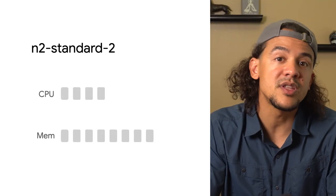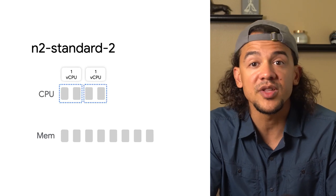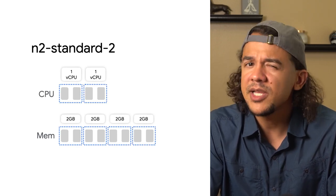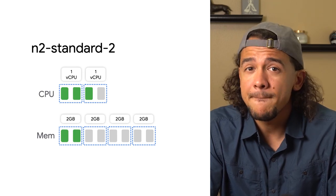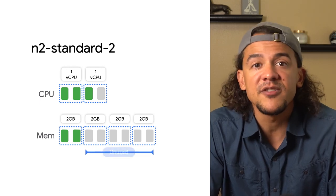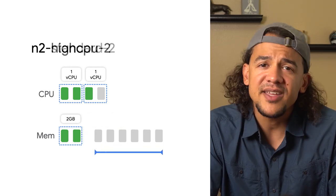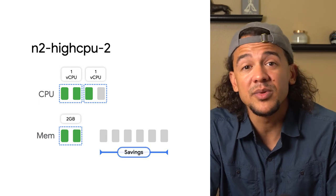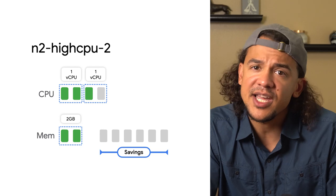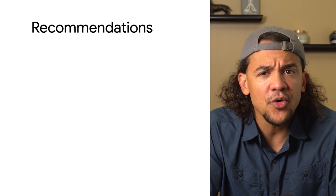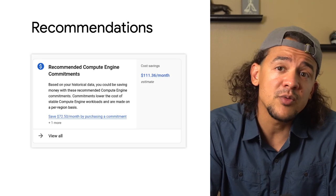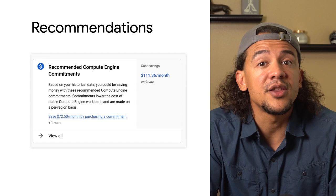For example, a general-purpose N2 Standard 2 provides two virtual CPUs and eight gigabytes of memory. But if your application uses most of the CPU most of the time but never really uses more than about two gigabytes of memory, you might be better off on an N2 High CPU 2 instance — that way you're not getting billed for six extra gigabytes of memory. Google Cloud provides right-sizing recommendations based on your usage data, available within the Compute Engine Instance page or within the Recommendations Hub.